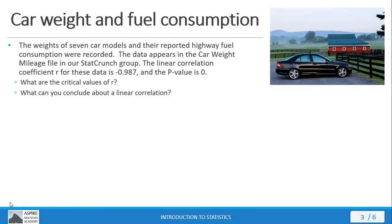Let's review previous mini lectures by looking at an example problem and then we can examine some new features of the linear correlation coefficient that pertain to linear regression. Here we have the weights of seven car models and the reported highway fuel mileage. You can find the data in our StatCrunch group, but all you need to know for this problem is we have a linear correlation coefficient of negative 0.987 and a p-value of 0.